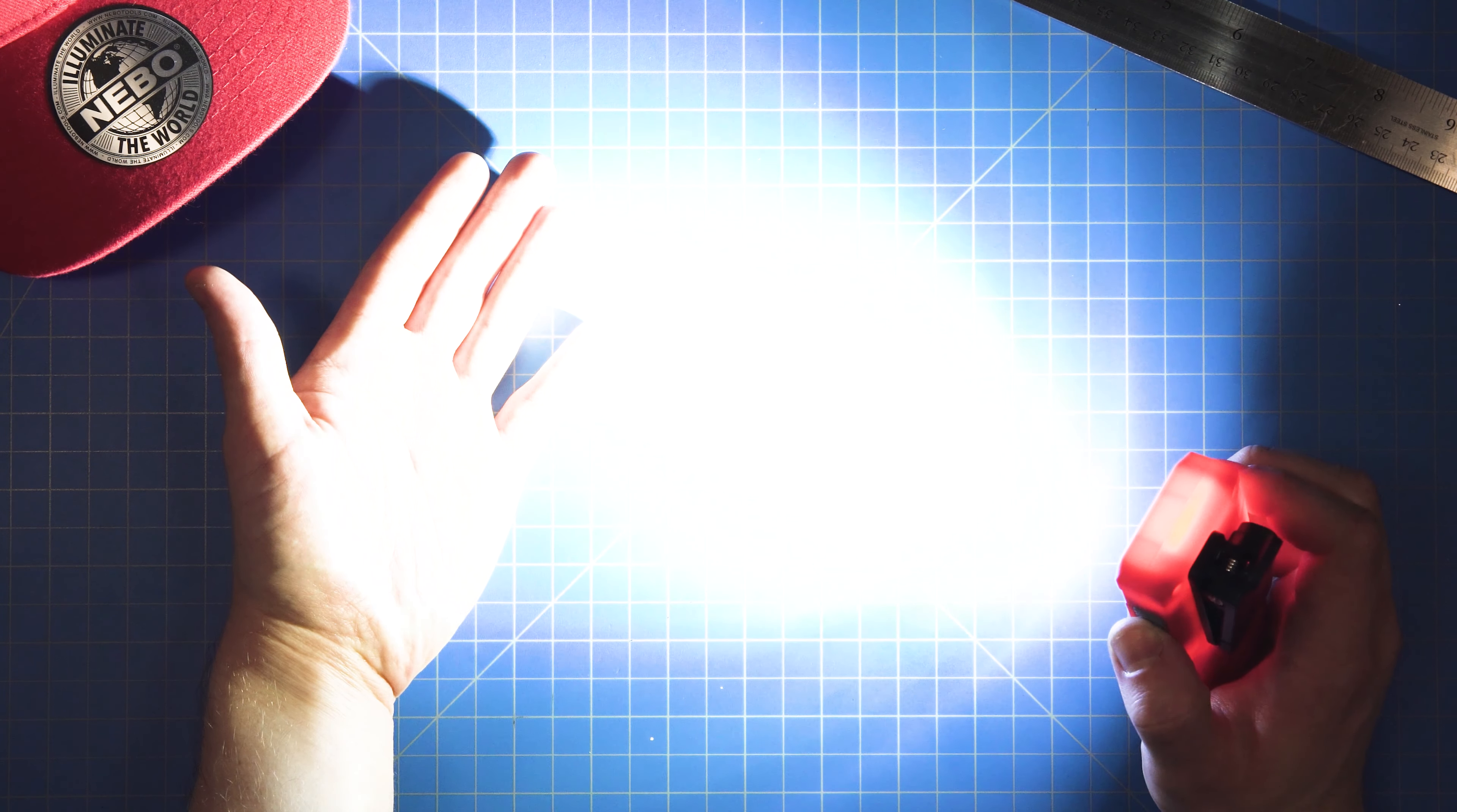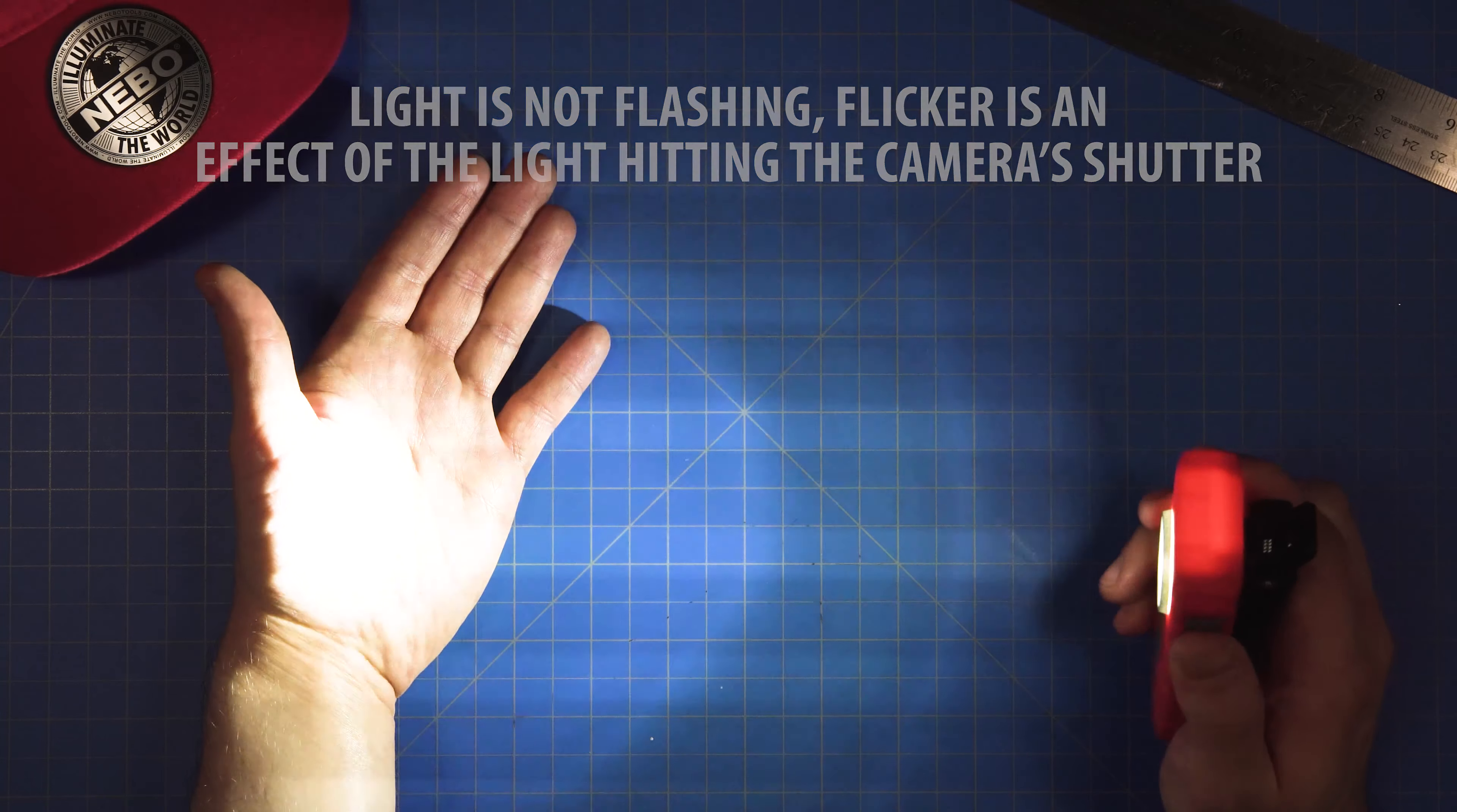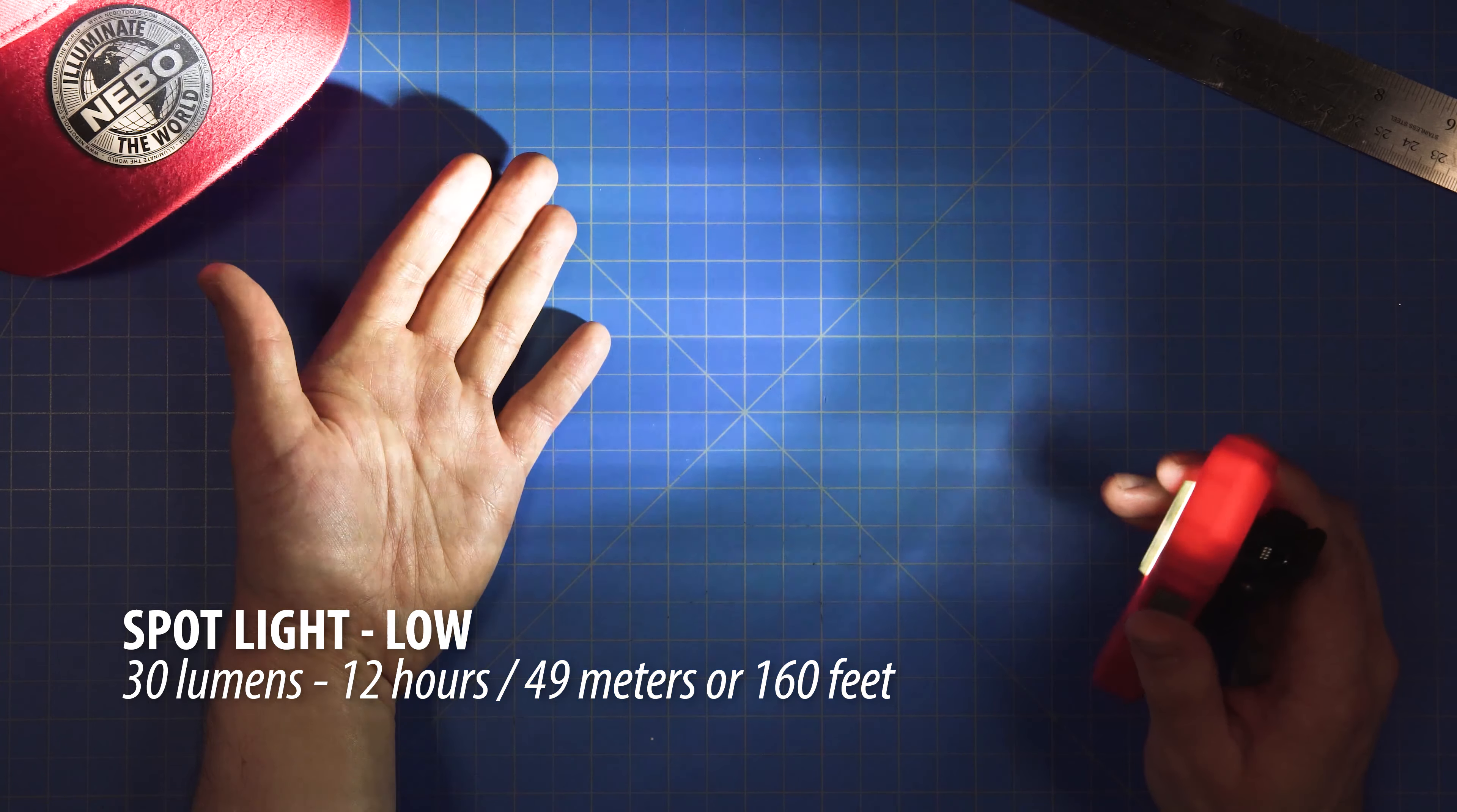Holding the button down will dim the light, and once you reach the lowest setting, which is indicated by a flash, the spotlight is up to 30 lumens shining at a distance of 49 meters or 160 feet for 12 hours.